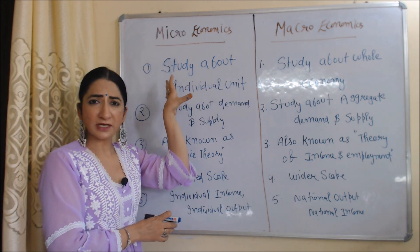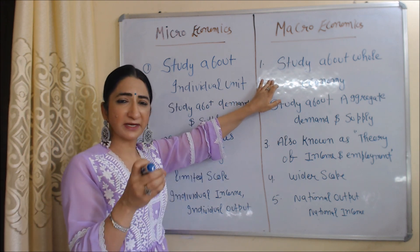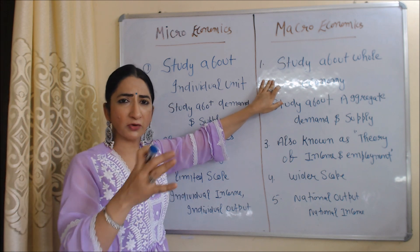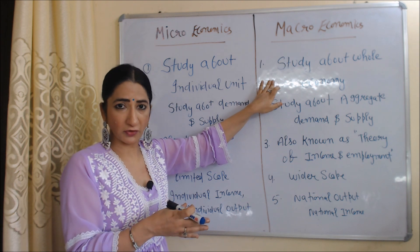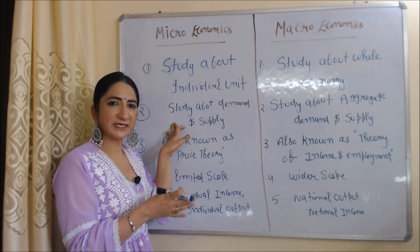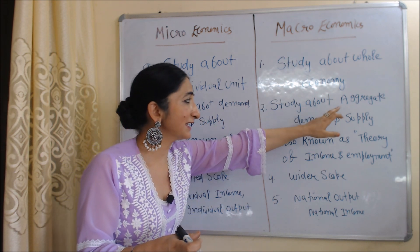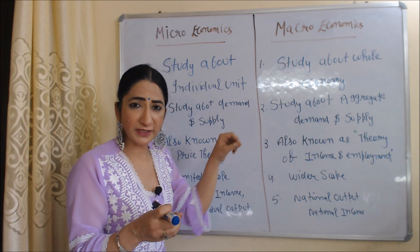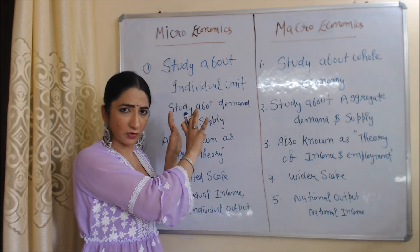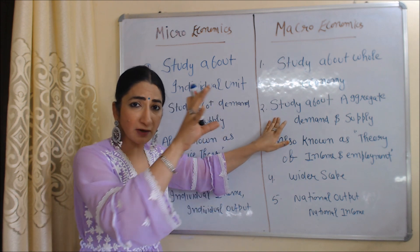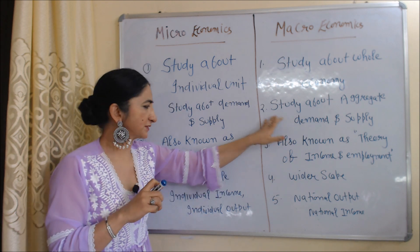Now we are going to talk about microeconomics and macroeconomics. Microeconomics studies individual units, for example individual demand and individual supply. Macroeconomics studies the whole economy, for example inflation and GDP of the whole economy. Microeconomics studies demand and supply, while macroeconomics studies aggregate demand and supply. If we are studying only daily demand, it is called microeconomics; if we study demand of whole India, it is called macroeconomics.